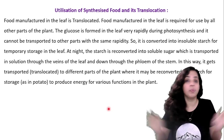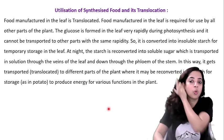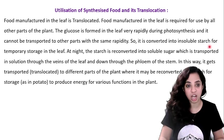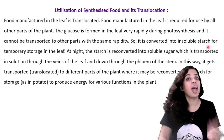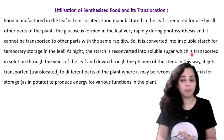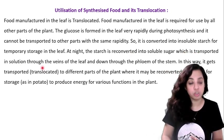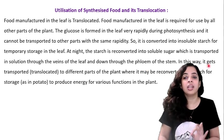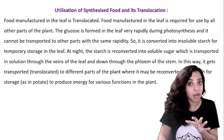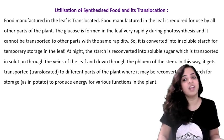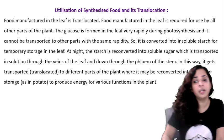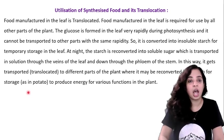To summarize: glucose is produced rapidly by photosynthesis, temporarily converted into insoluble starch and stored in the leaf. At night it converts back into soluble sugar and is transported in solution through the leaf veins and phloem. At the destination, it may again be converted into starch for storage.